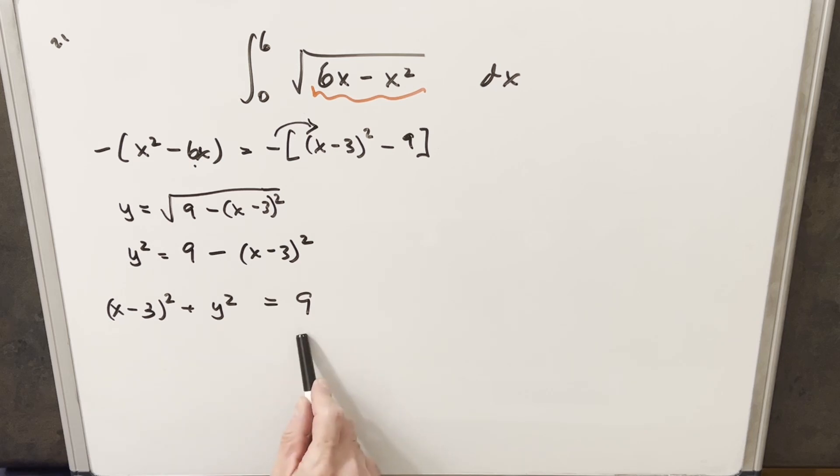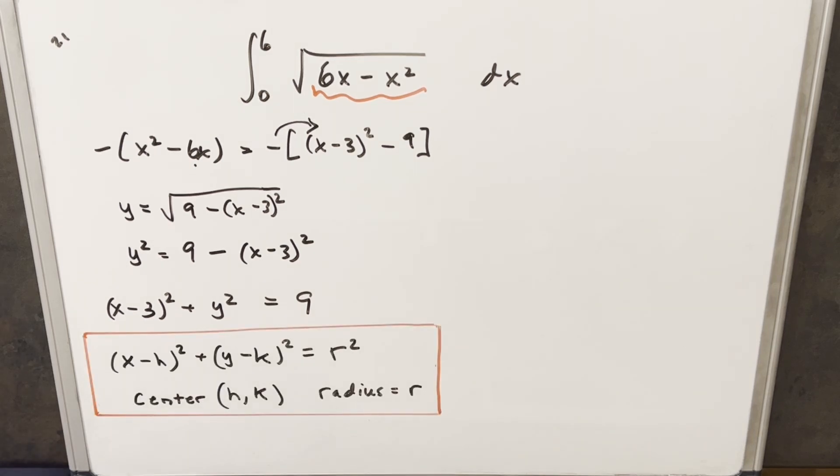And then at this point, what we want to notice is this is in the form for the equation of a circle. Now we have our equation for the circle down here to the left, and we have everything we need.